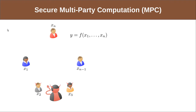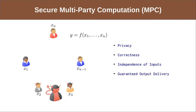One can consider several notions of security, like privacy, which means that the honest party's inputs are not revealed to the adversary; correctness, which means that the honest parties do not output wrong values; independence of inputs, which means that the adversary cannot base his inputs off of the honest party's inputs; and guaranteed output delivery, which means that the honest parties always receive the output.